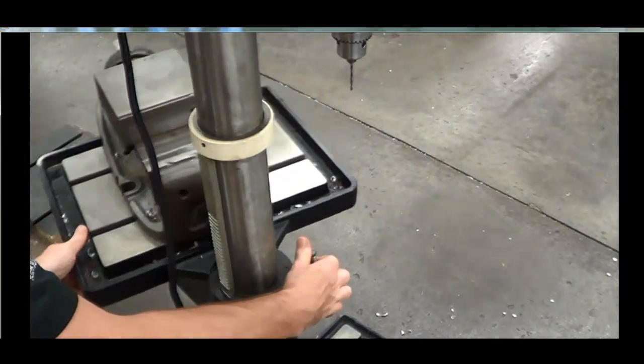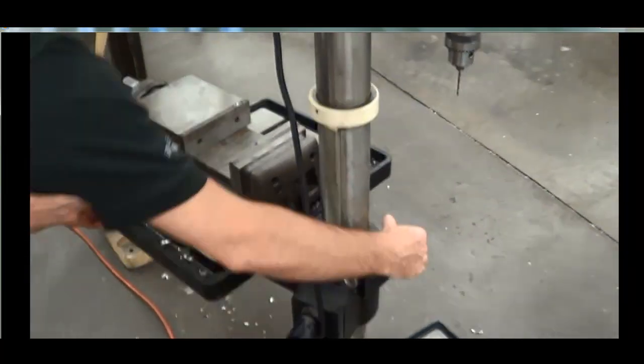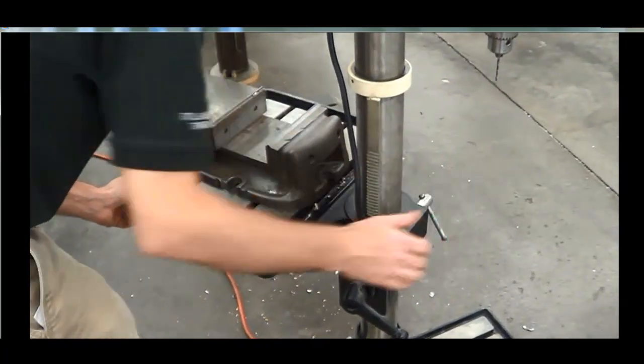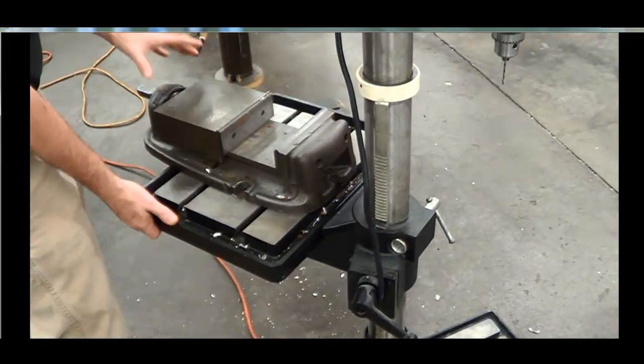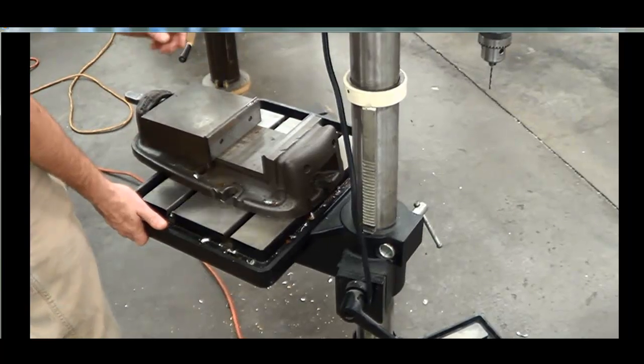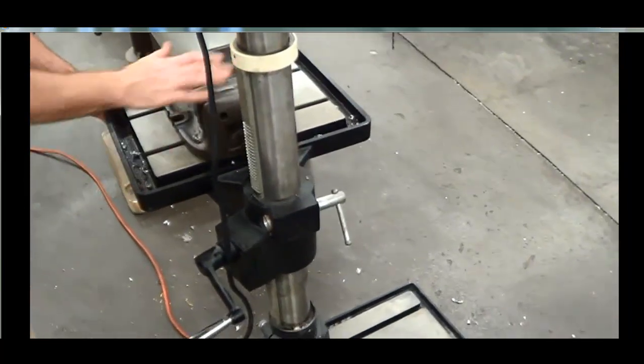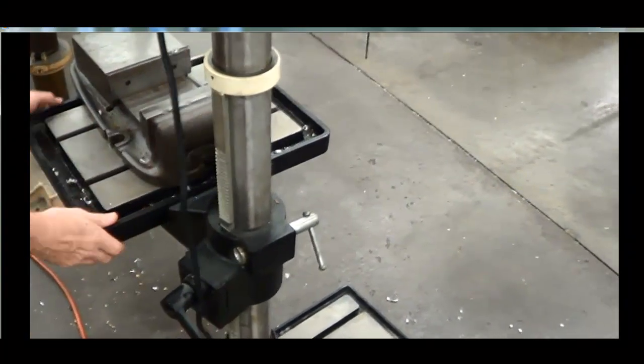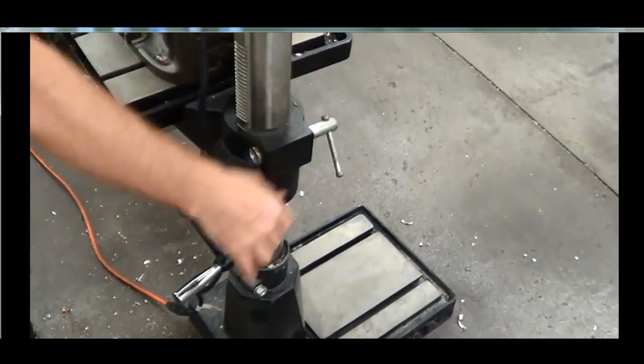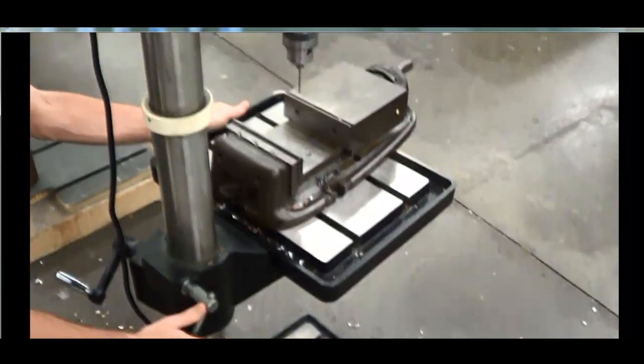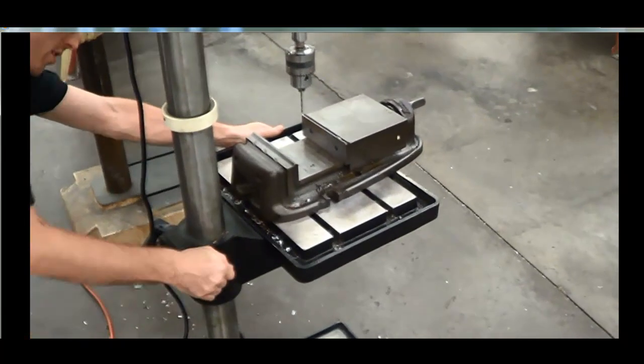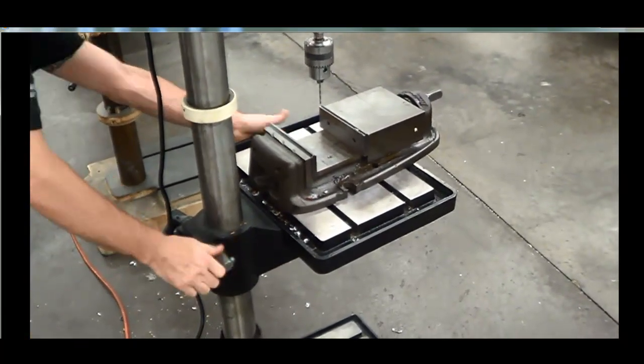We can also spin this out of the way, as I've talked about previously. And as long as nothing's heavy on here, if it's too heavy back here, then it might tip over. So you always want to make sure you have nothing heavy if you're going to spin this work table all the way to the back so you can put a larger piece on. When you get it in position, you always lock the table clamp down.